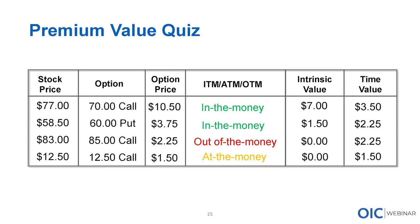Third example: $83 stock, $85 call trading at $2.25. It's a call option and the strike is above the stock price. If we exercised, we'd be buying stock at $85 when it's only trading at $83 in the market. So that option is out of the money — it has no intrinsic value, and 100% of the option price is attributed to time value.